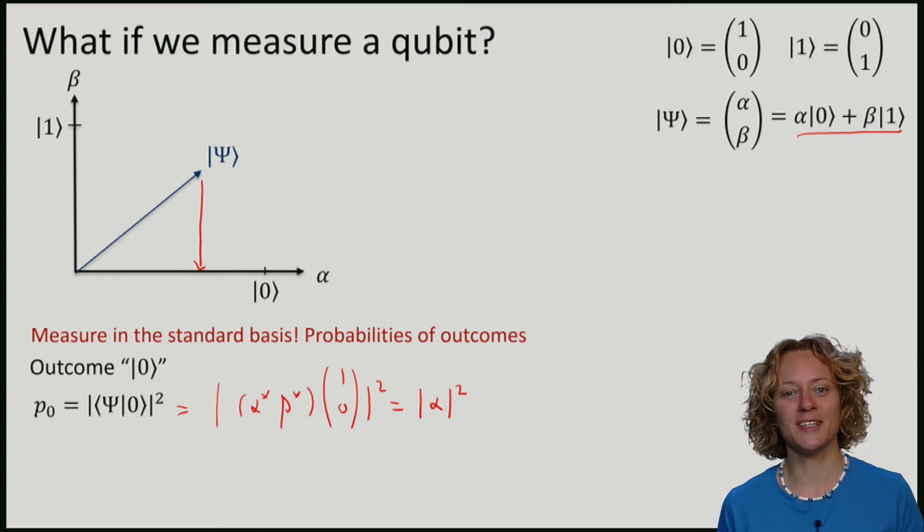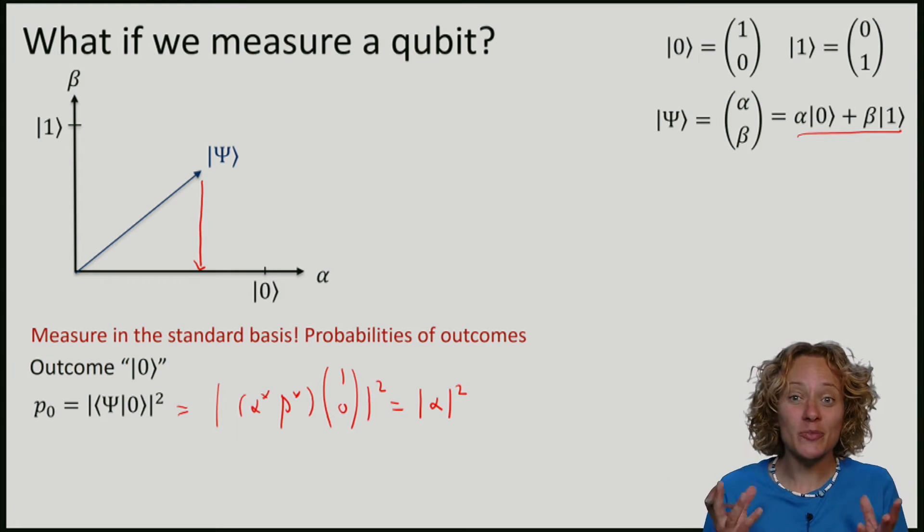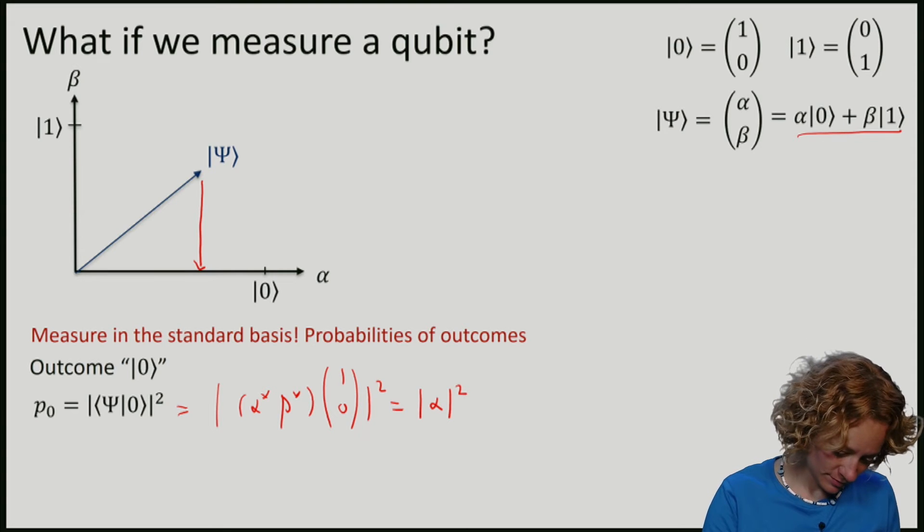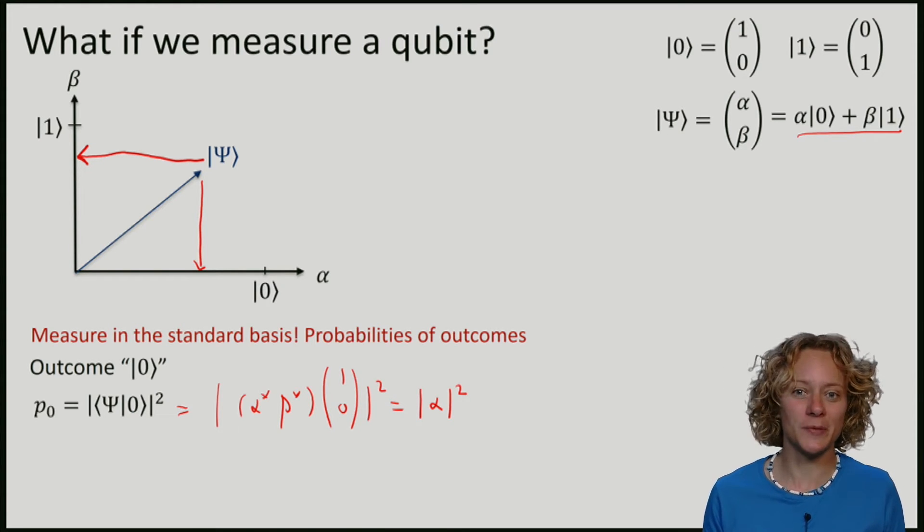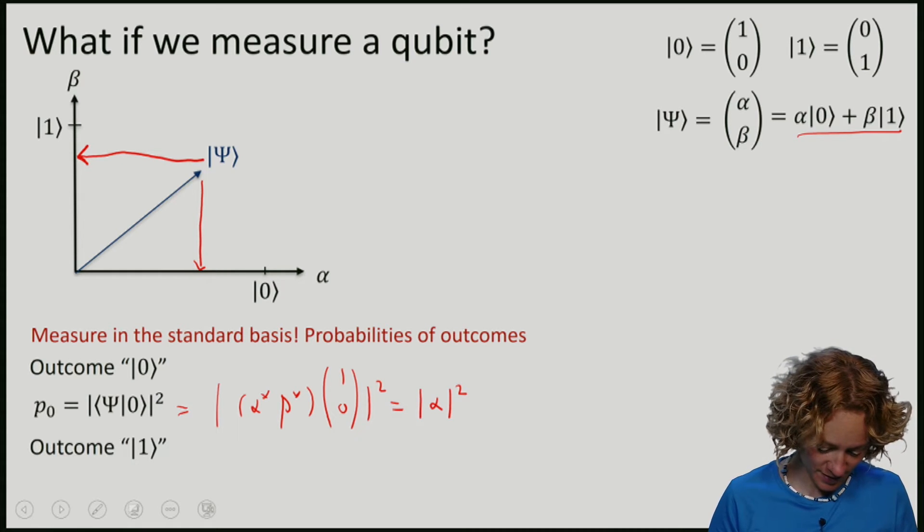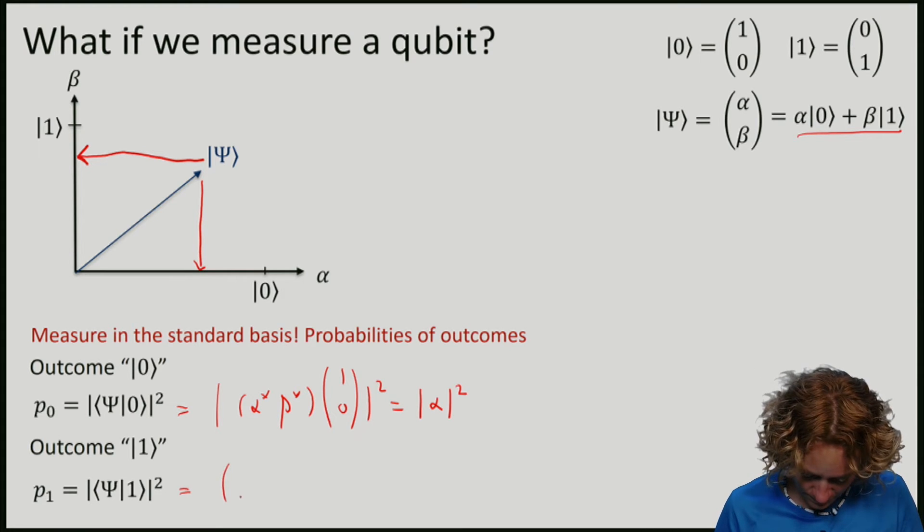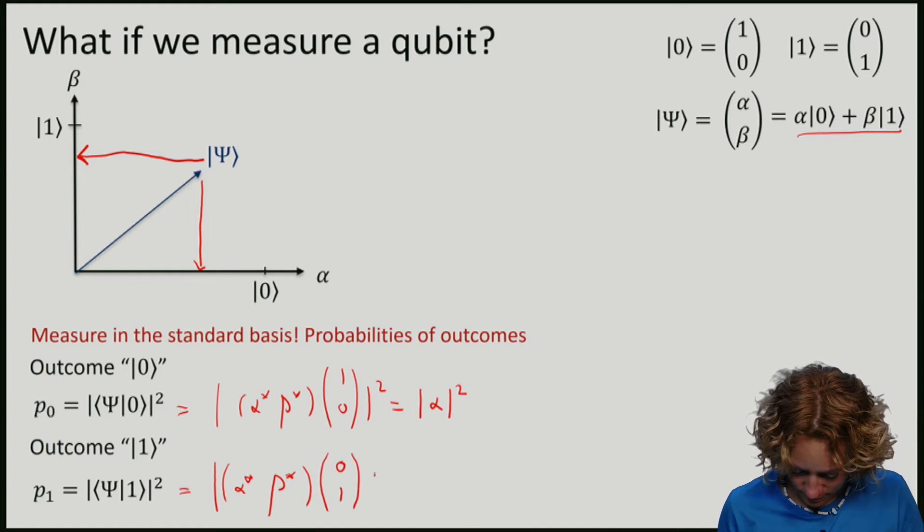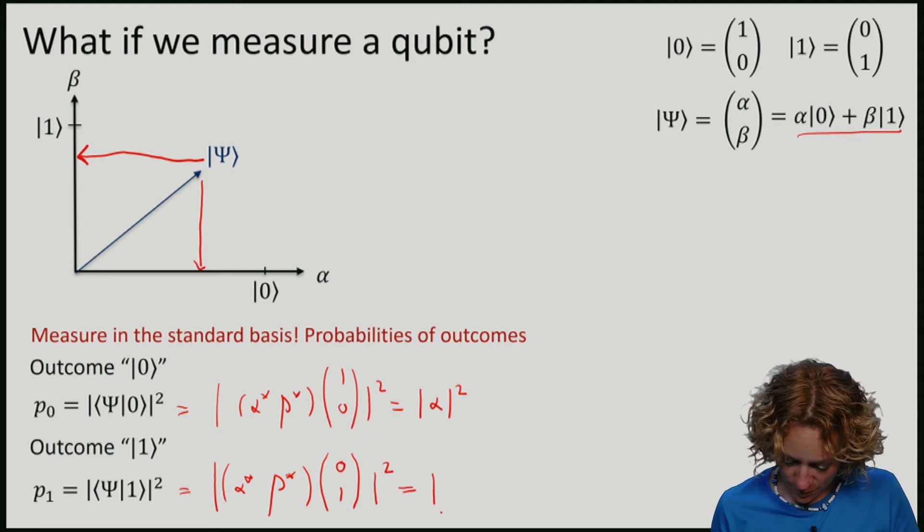We can also compute the probability of obtaining the output 1. And again, this is just given by how much of 1 is in this vector. So we will compute the inner product between psi and 1. And we can easily do this as before. And we will find that it is given by beta squared.